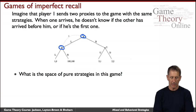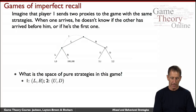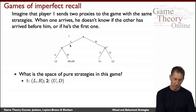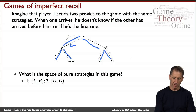Regardless of your interpretation, what are the pure strategies in this case? Well, the pure strategies for agent one involve this information set, where they can either do L or R. So they'd either go left depending on where they were, or go right depending on where they were. For agent two, there are again two pure strategies.